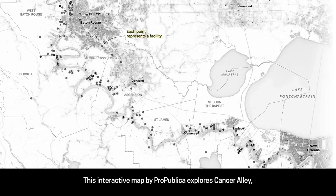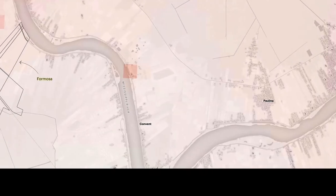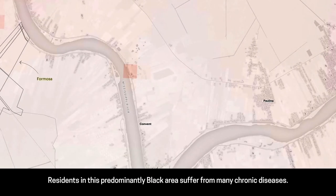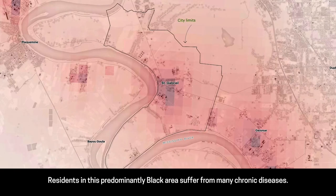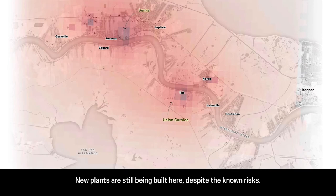This interactive map by ProPublica explores Cancer Alley, an area near New Orleans. The region is dotted with hundreds of chemical plants and oil refineries. Residents in this predominantly black area suffer from many chronic diseases. New plants are still being built here, despite the known risks.